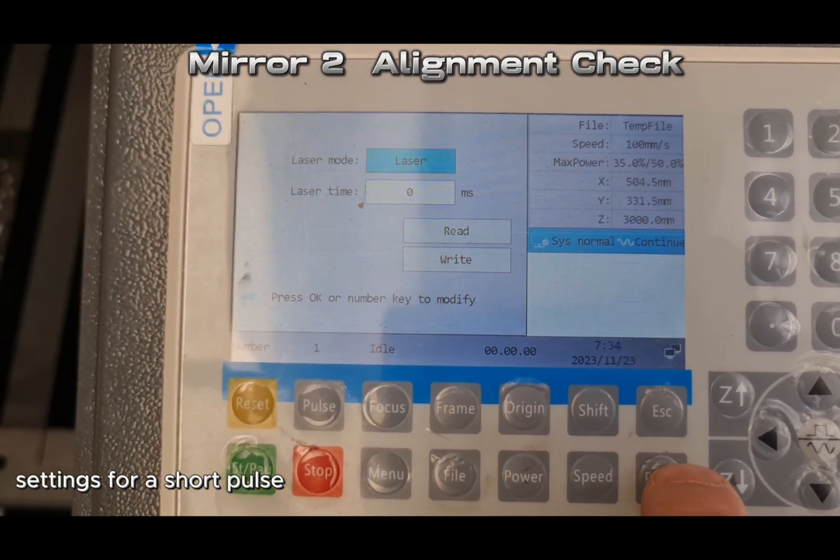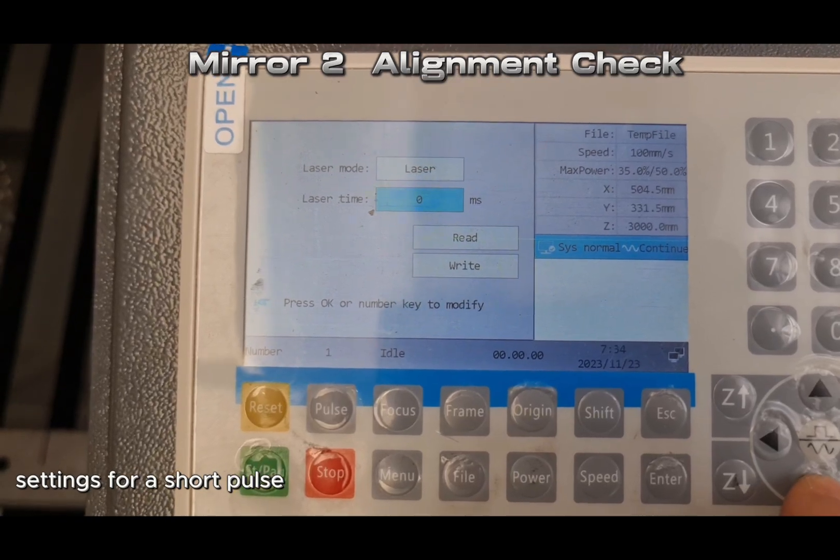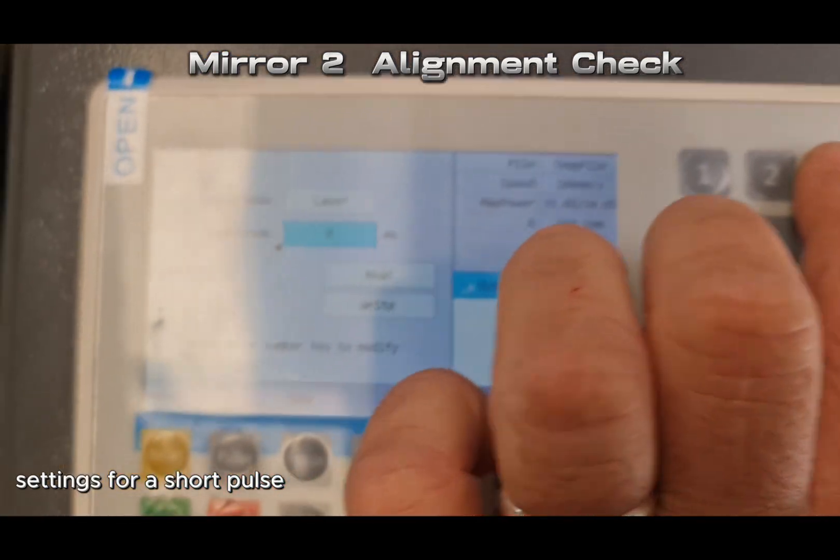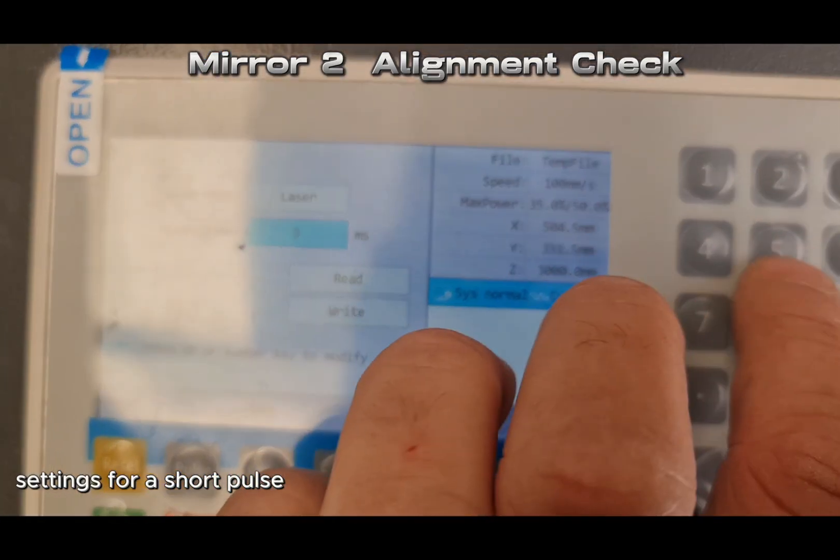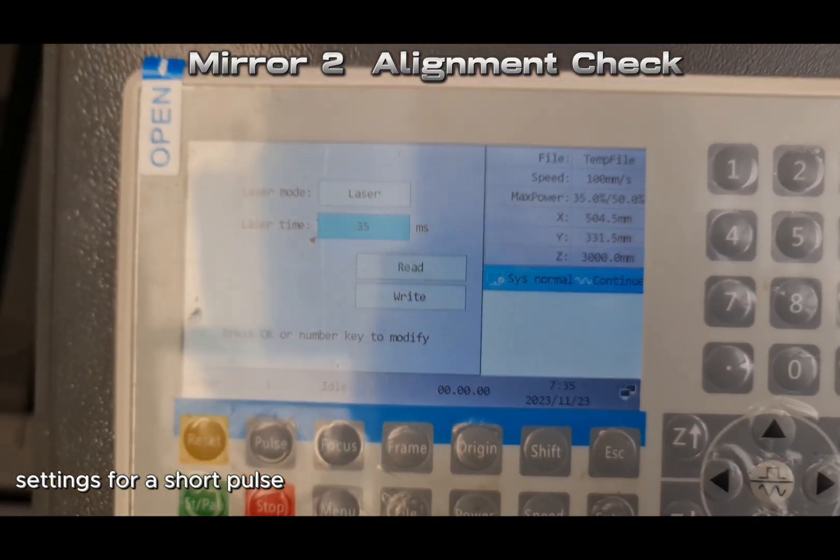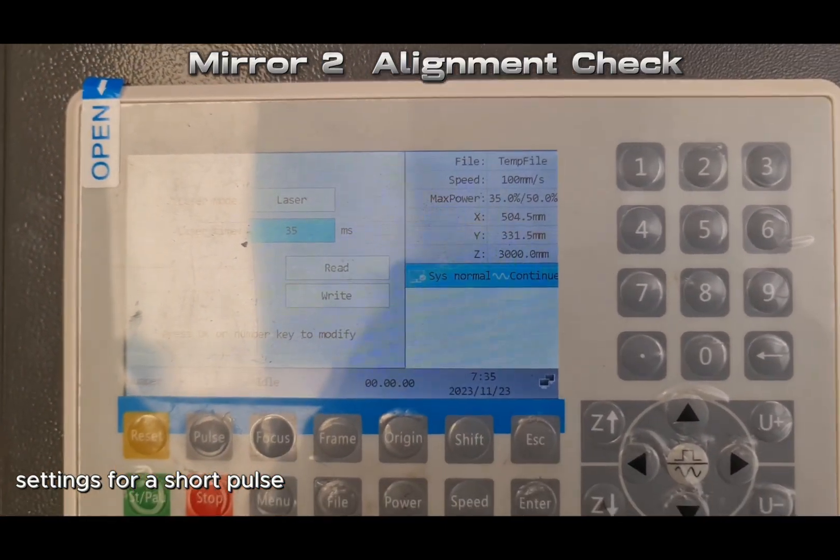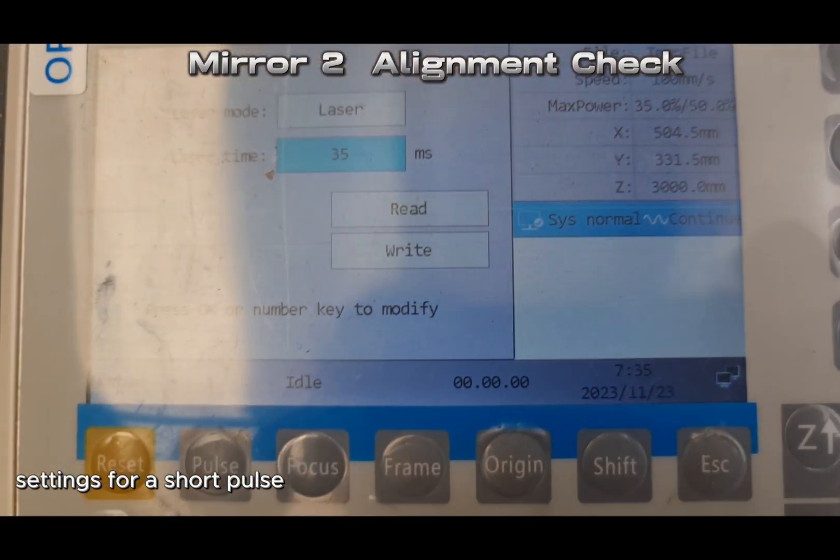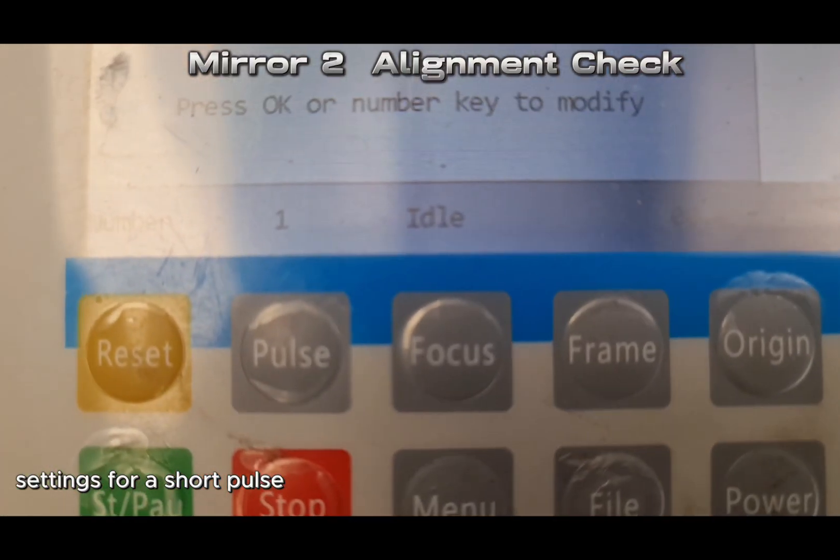Next we need to go down to laser time and type in 35. This will allow your laser to, once you hit the pulse button, only fire for 35 milliseconds instead of a long time. You hit that pulse button.